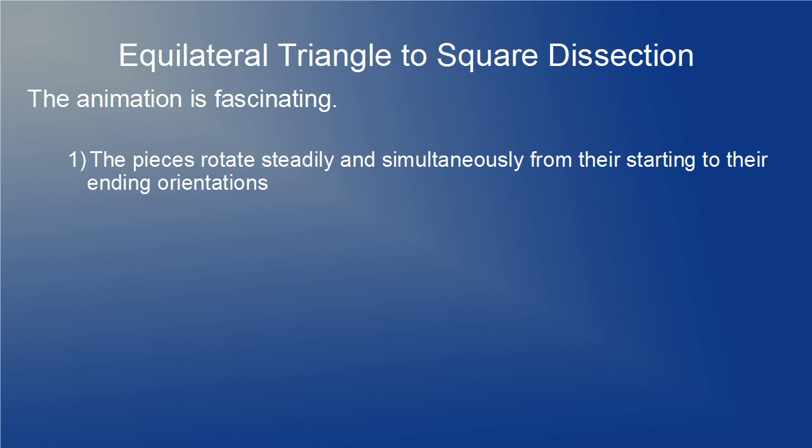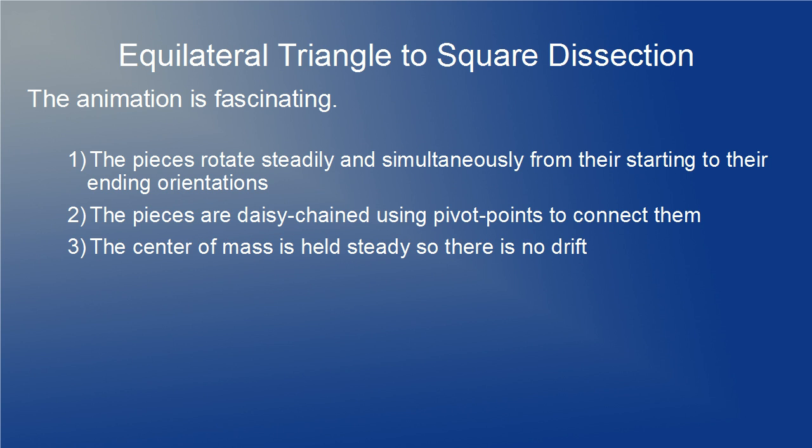First, the pieces rotate steadily and simultaneously from their starting to their ending orientations. Then the pieces are daisy-chained using pivot points to connect them. Finally, the center of mass is held steady, so there is no drift from the center.